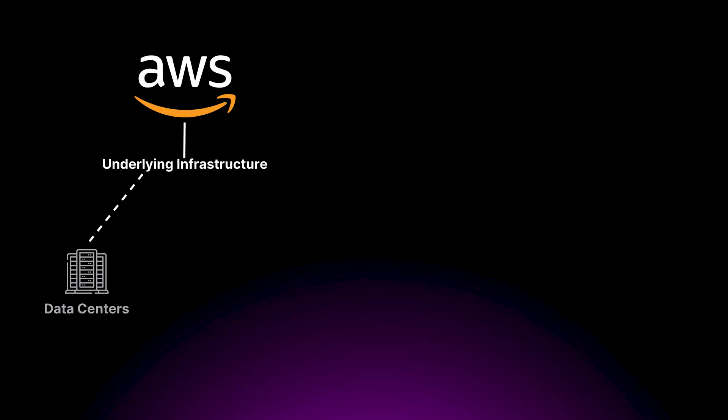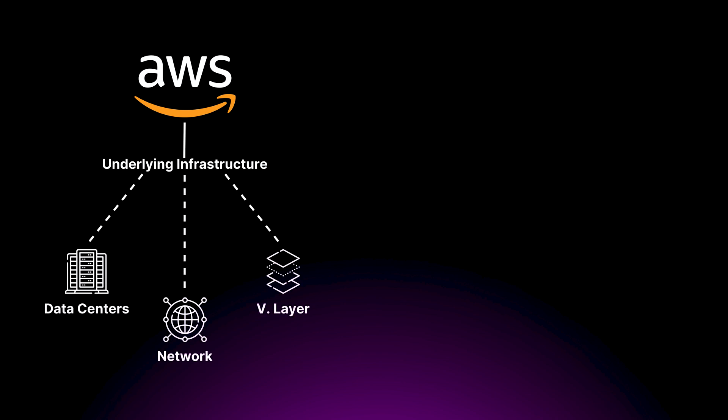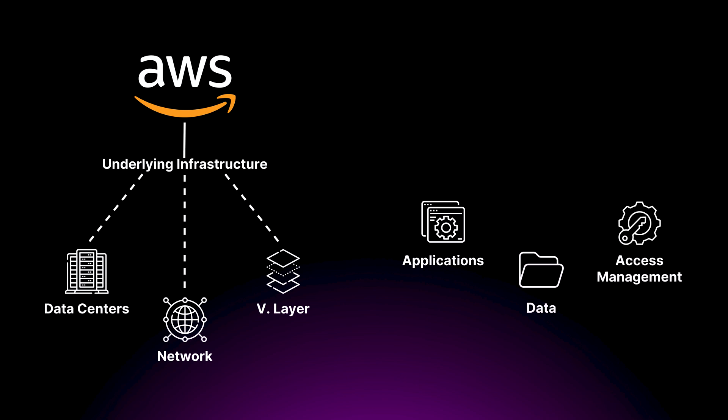First things first, let's talk about the shared responsibility model. When you're working with a cloud provider like AWS, security is a team effort. Your provider is responsible for securing the underlying infrastructure — the physical data centers, the network, and the virtualization layer. But when it comes to securing your applications, data, and access management, that's completely your responsibility. A lot of founders and tech teams make this mistake — they think the cloud is secure by default. This is not the case. You need to understand the split responsibility between you and the provider.